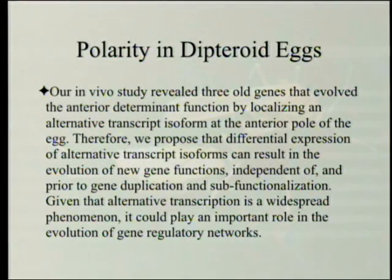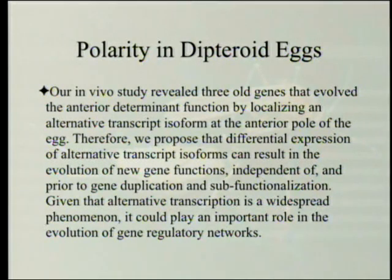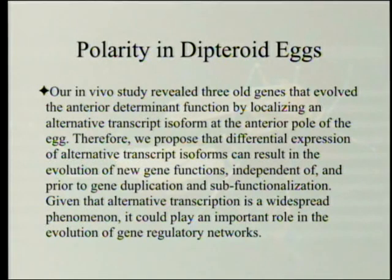The in vivo study revealed three old genes that evolved the anterior determinant function by localizing an alternative transcript isoform at the anterior pole of the egg. The researchers propose that differential expression of alternative transcript isoforms can result in the evolution of new gene functions independent of and prior to gene duplication and sub-functionalization. Given that alternative transcription is a widespread phenomenon, it could play an important role in the evolution of gene regulatory networks.